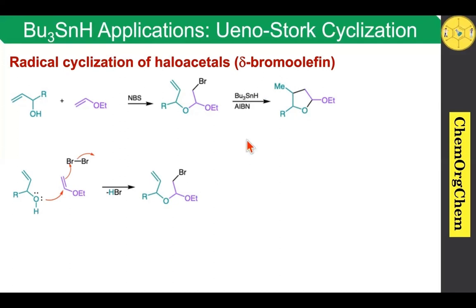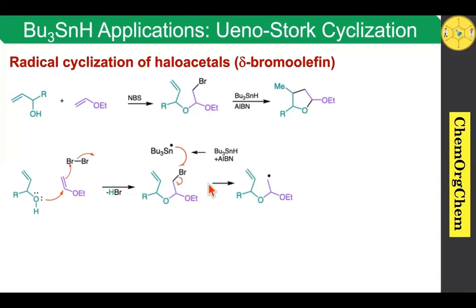The next step: when you use tributyltin hydride and AIBN, which readily generates the tributyltin radical. If you want to know the exact mechanism behind tributyltin hydride AIBN, just go and watch our first part of the video. This tributyltin radical readily abstracts the bromine atom, which produces this carbon-centered radical. After generation of the carbon-centered radical, it readily attacks the alkene at this particular carbon. If you are not sure about the regioselectivity of this particular attack, go through our Part 1 video.